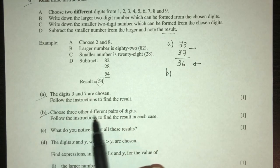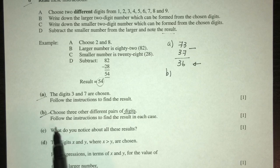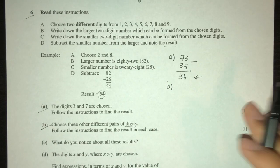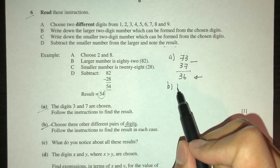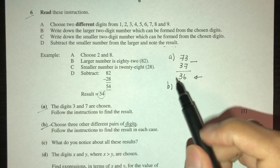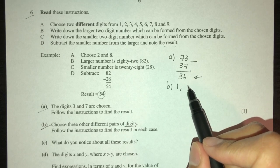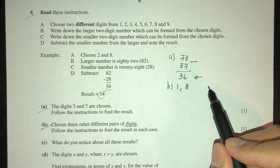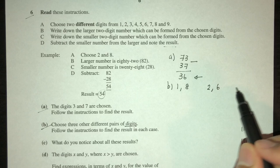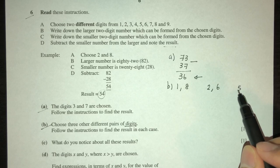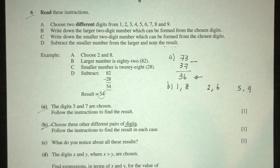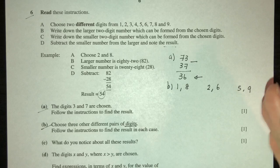Now for part (b), you will have to choose three other pairs of numbers and follow the instructions. So let's choose other numbers. Let's say I choose 1 and 8, I choose 2 and 6, and I will choose 5 and 9. These are random selections - it can be any numbers you want to choose as well.